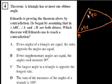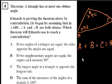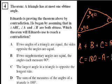That's what obtuse means. Which theorem will Eduardo use to reach a contradiction? Well, before even reading the choices, think about it. What do we know about triangles? All of the angles add up to 180 degrees. So angle A plus angle B plus angle C equals 180 degrees. Another way to write it: C equals 180 minus A minus B.